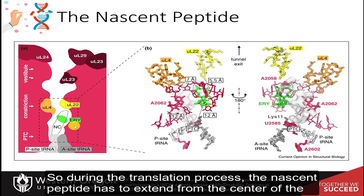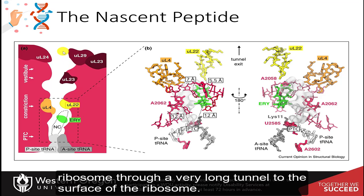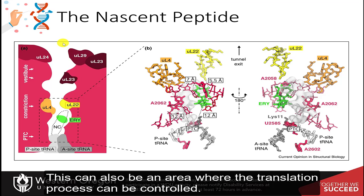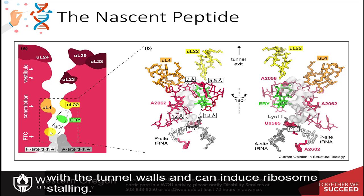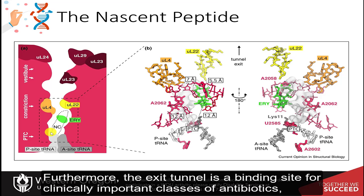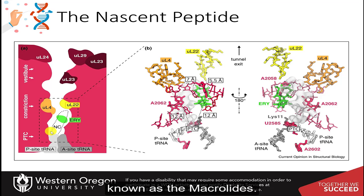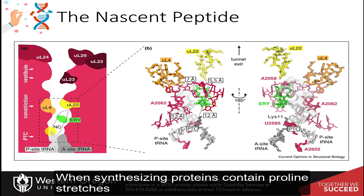During the translation process, the nascent peptide has to extend from the center of the ribosome through a very long tunnel to the surface of the ribosome. This can also be an area where the translation process can be controlled. Certain peptide sequences specifically interact with the tunnel walls and can induce ribosome stalling. Furthermore, the exit tunnel is a binding site for clinically important classes of antibiotics known as the macrolides.